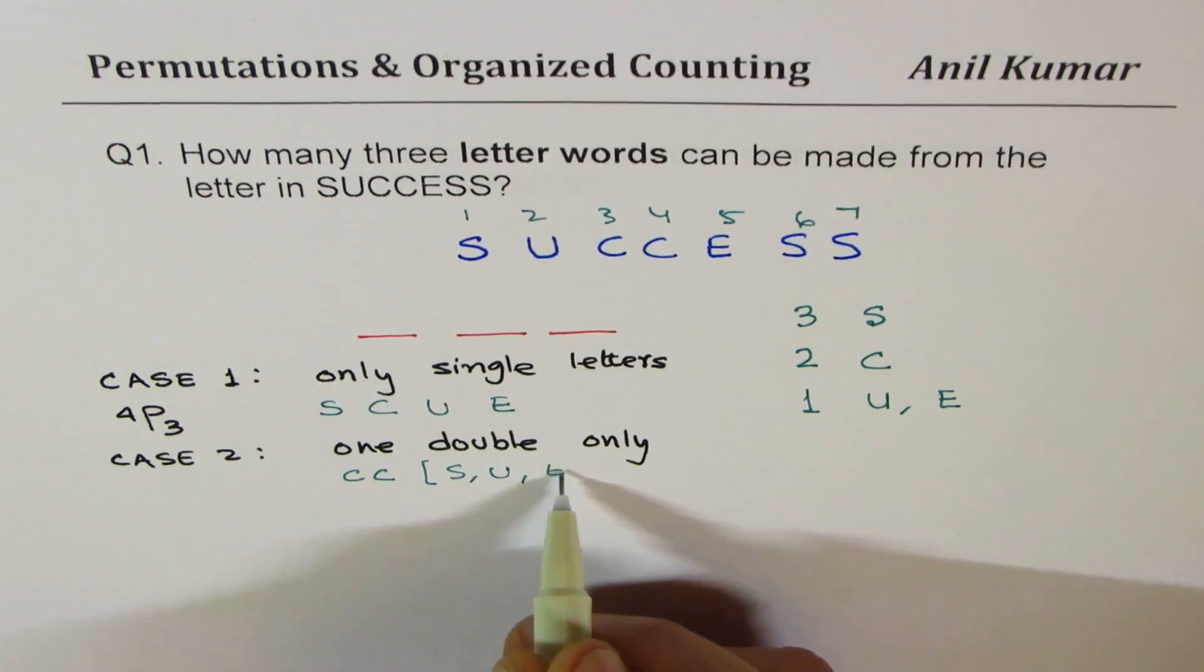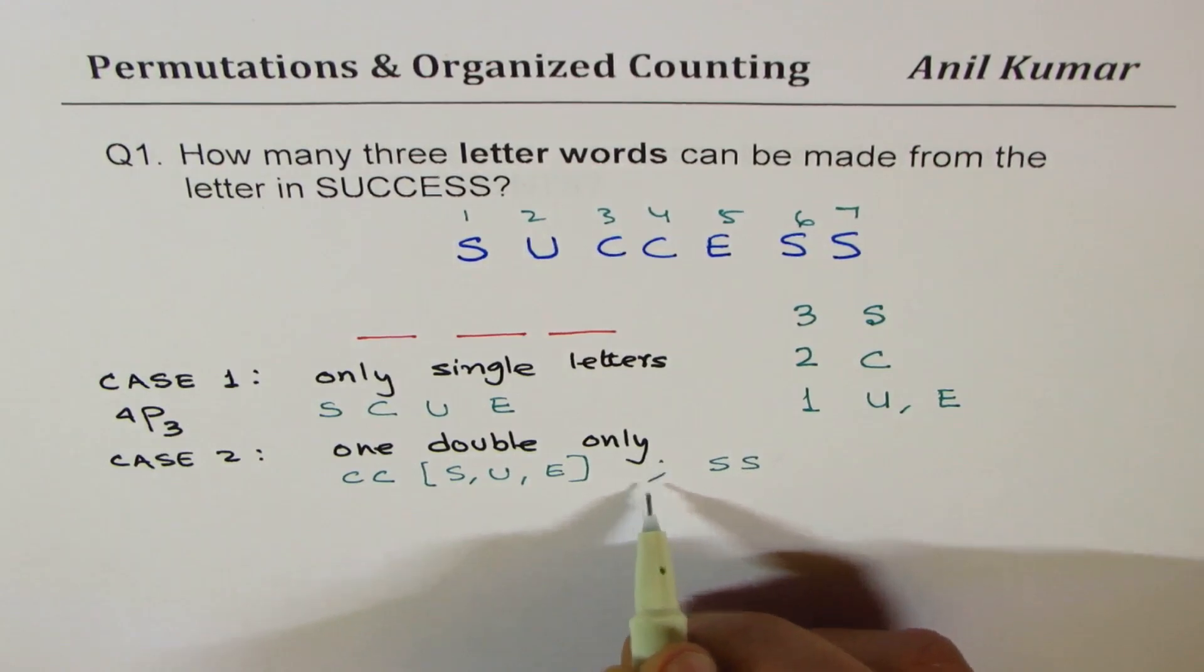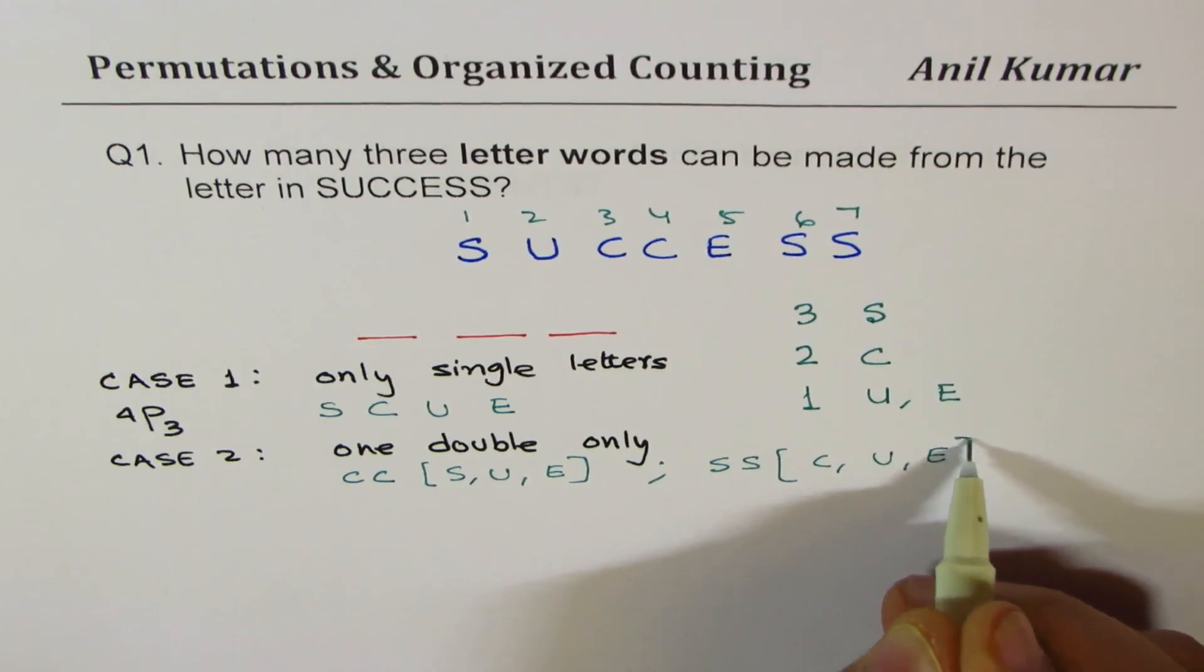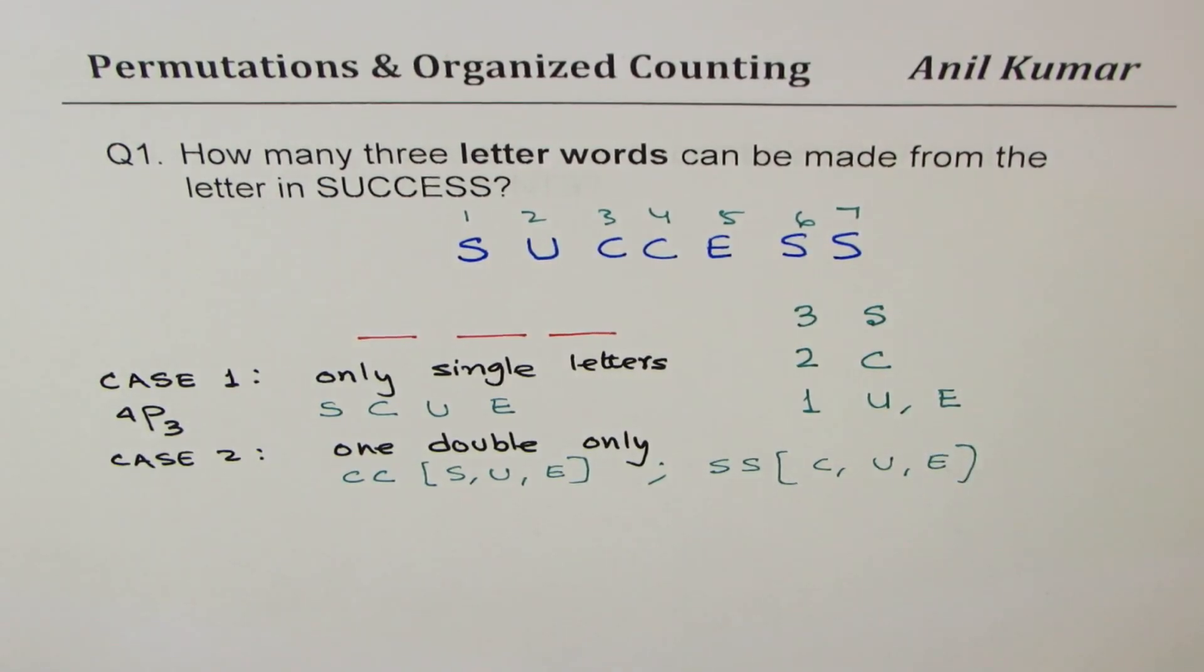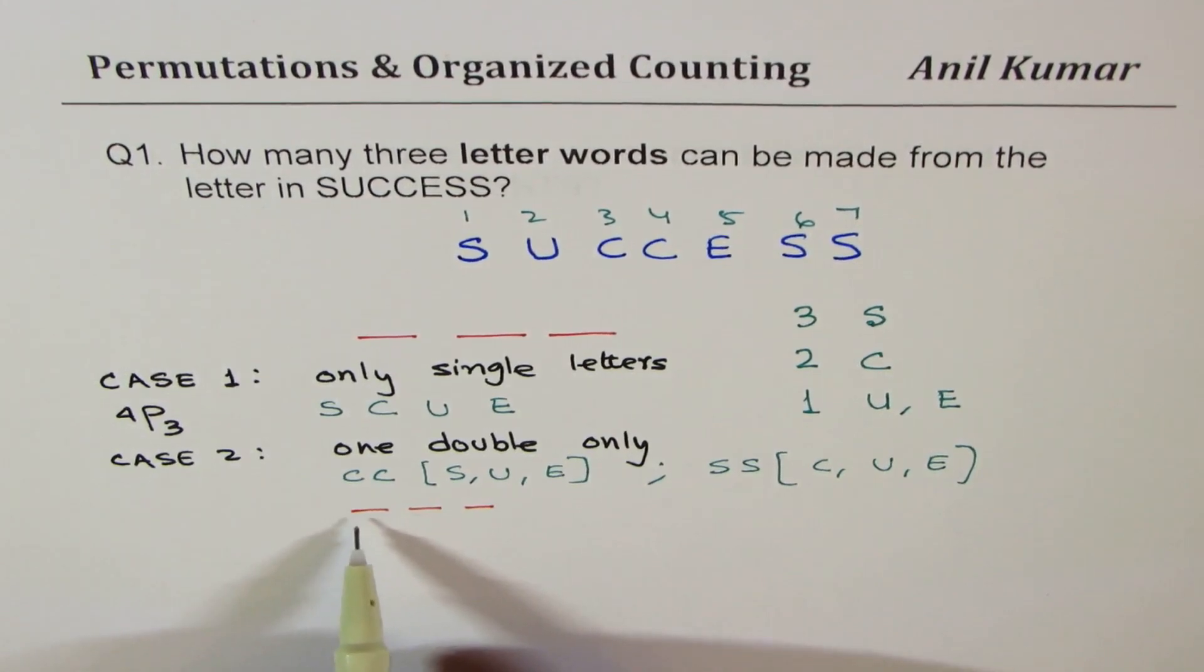We could have two C's along with any of the others, which are S, U, and E, right? Or we could have two S with C, U, or E. Correct. So let's look into this one first. Again, we are left with three spaces.